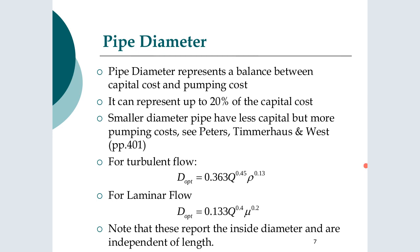The pipe diameter is a balance between the capital cost and the pumping cost. There is quite a lot of piping in the plant invariably as you move stuff around, and it can represent up to about 20% of the capital cost. You'll see this when you do design projects and you're looking at the capital requirements. As mentioned earlier, smaller diameter pipes have less capital but more pumping costs. And you should understand why — why is the pumping cost higher with smaller diameter pipes?